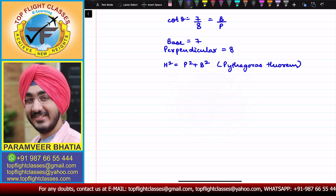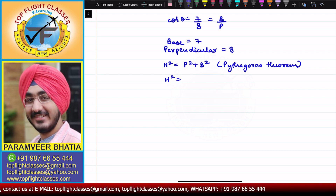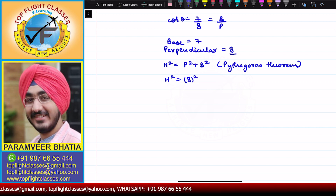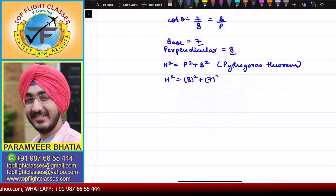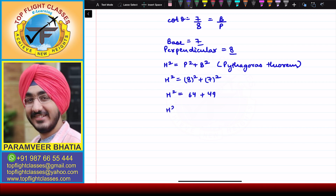So to find the hypotenuse, we calculate hypotenuse² = perpendicular² + base². Perpendicular is 8, so we have 8² plus base². Base is 7, so plus 7². Here we get hypotenuse² = 64 + 49, so hypotenuse² comes out to be 113.